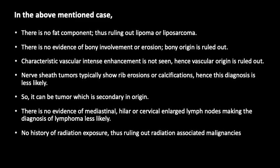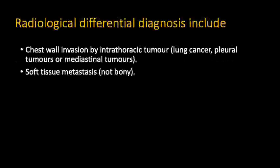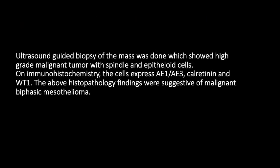The radiological differential diagnosis includes chest wall invasion by an intrathoracic tumor such as lung cancer, pleural tumor, mediastinal tumor, or soft tissue metastasis. Ultrasound-guided biopsy was performed which showed a high-grade malignant tumor with spindle and epithelioid cells. Immunohistochemistry showed the cells expressed AE1, AE3, calretinin, and WT1. These findings were conclusive of malignant biphasic mesothelioma.